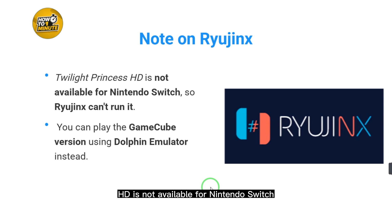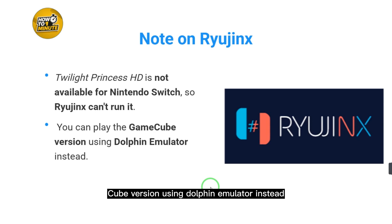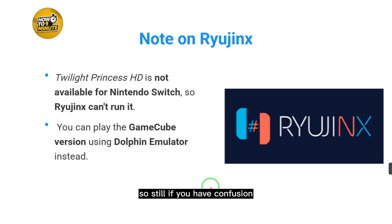Here is a note on Ryujinx: Twilight Princess HD is not available for Nintendo Switch, so Ryujinx cannot run it. You can play the GameCube version using Dolphin emulator instead. So Ryujinx is not available for this game. If you still have any confusion, just comment down below and I will help you.